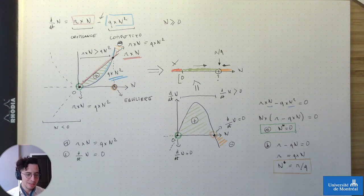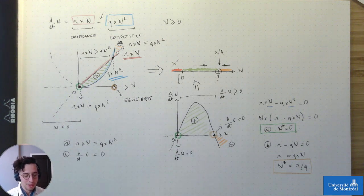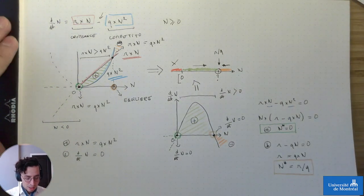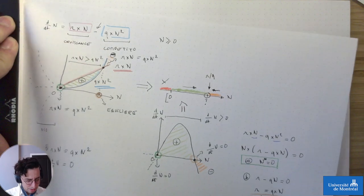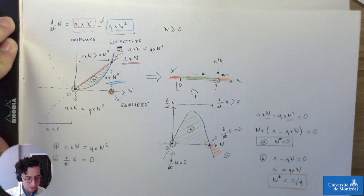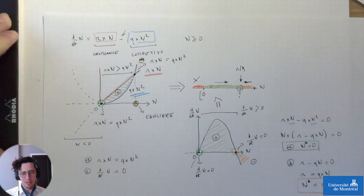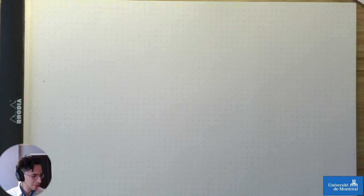Le travail préliminaire, c'est toujours d'identifier les états d'équilibre, et on peut faire une grosse partie de ce travail avec des méthodes graphiques. C'est la première étape. Notre modèle était assez simple parce qu'il avait une seule variable. Dans la majorité des cas, on va avoir des modèles qui ont plusieurs variables avec des relations entre elles. Au passage, vous allez avoir un PDF des notes — ce n'est pas la peine de tout reproduire, je vais les scanner et elles seront disponibles à la fin du cours.